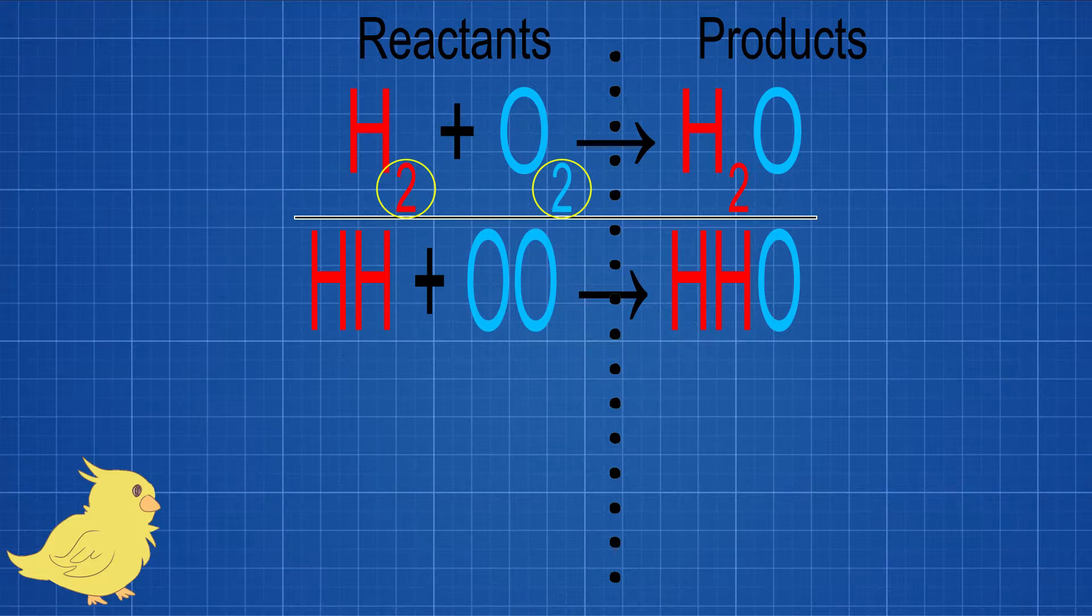Thirdly, we've got our water. Water is a molecule. That means the atoms are stuck together. They come as a big clump. They can't be broken up. So we are going to write on our first row again, H, H, O.